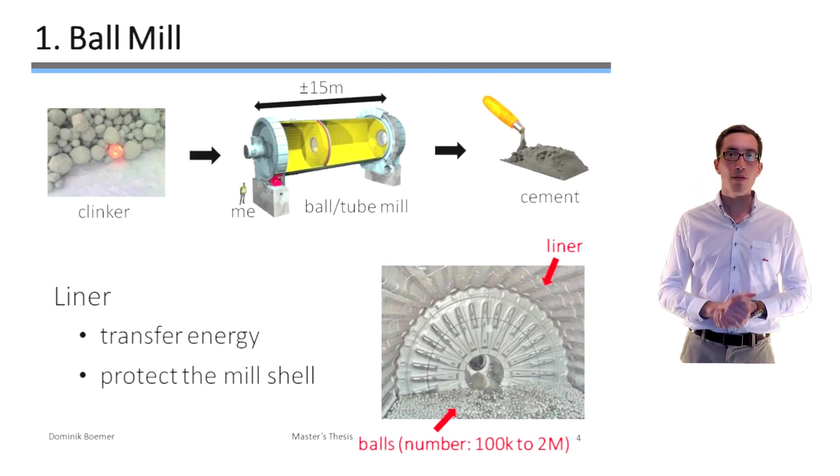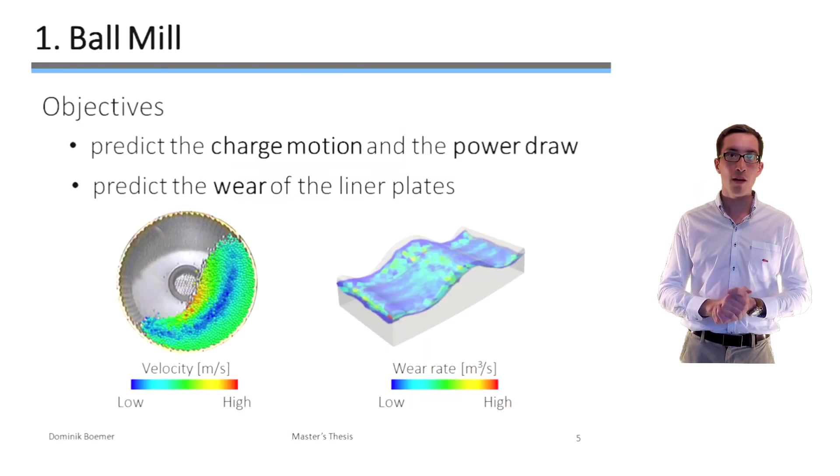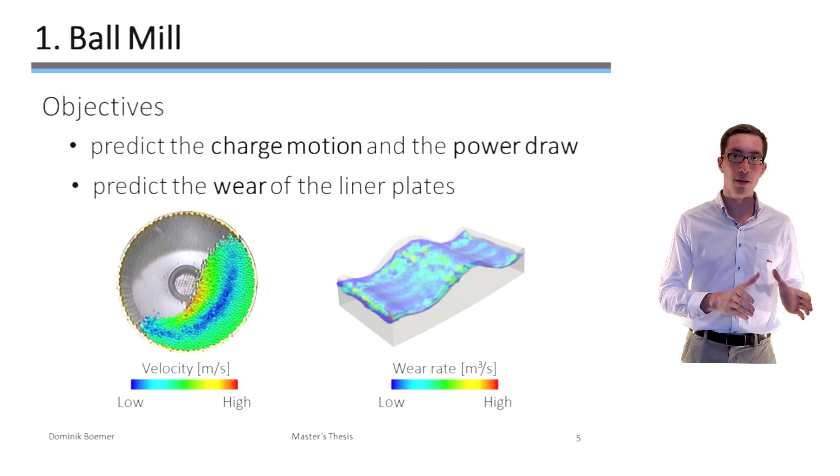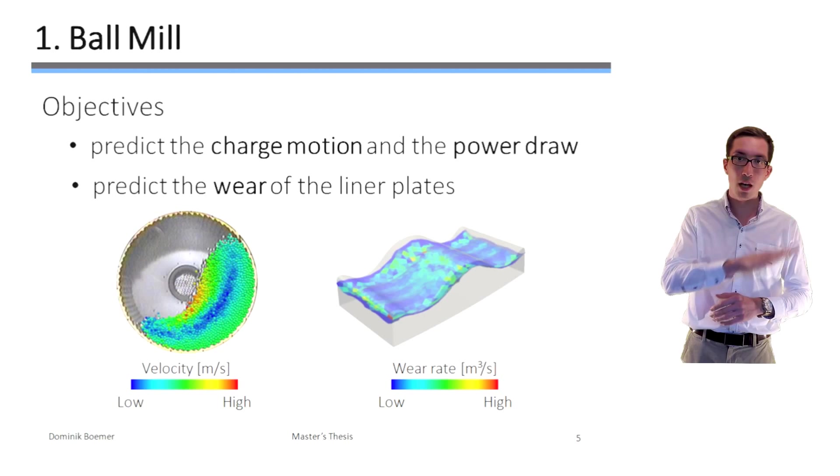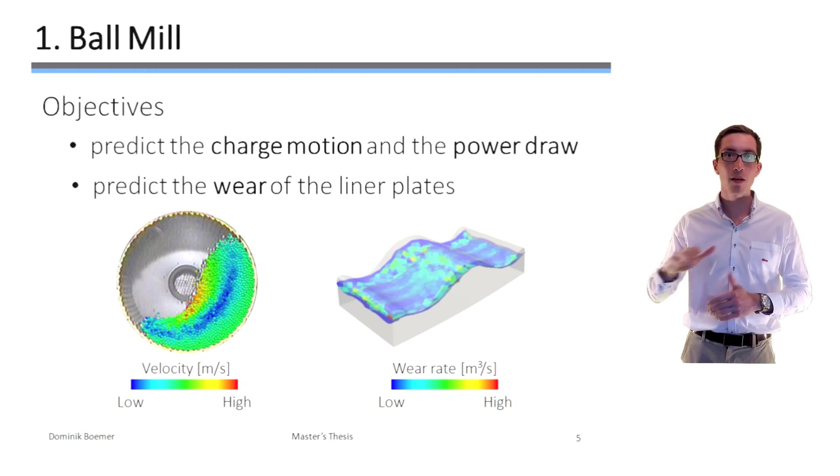The objective of this thesis is therefore to develop a method which is able to predict the motion of the bolts inside of the mill as well as its power draw on the one hand. On the other hand, we want to predict the wear, this means the change in the shape of the liner plates due to the collisions with the metal bolts.